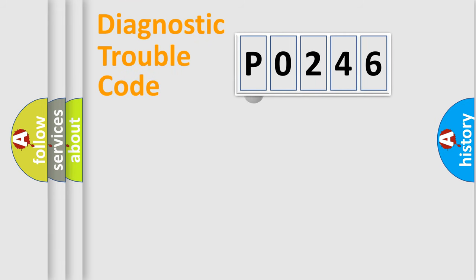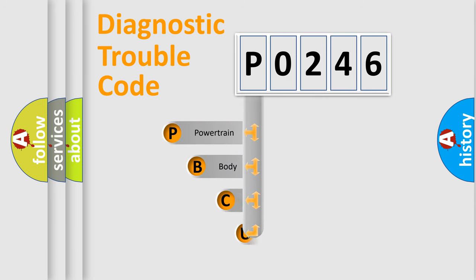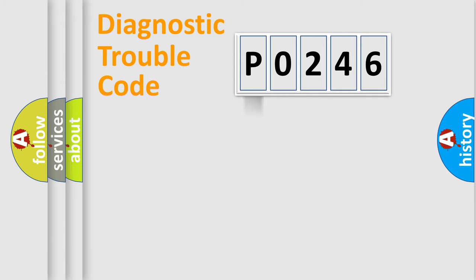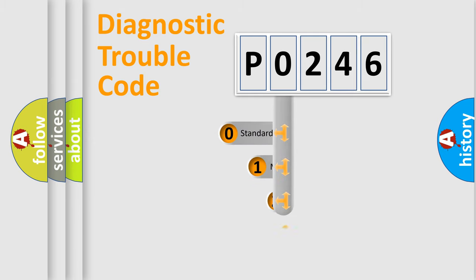First, let's look at the history of diagnostic fault code composition according to the OBD2 protocol. We divide the electric system of an automobile into four basic units: powertrain, body, chassis, and network. This distribution is defined in the first character of the code.